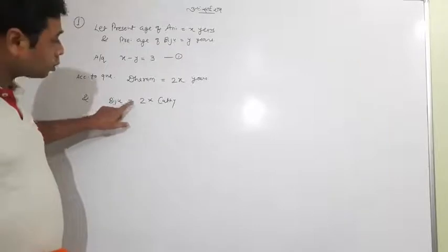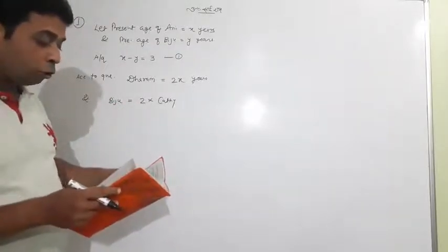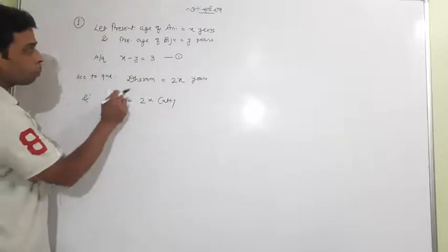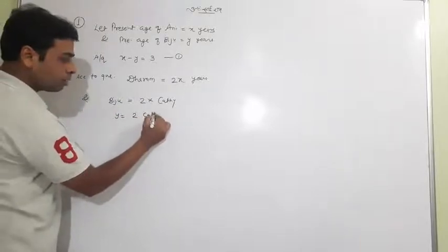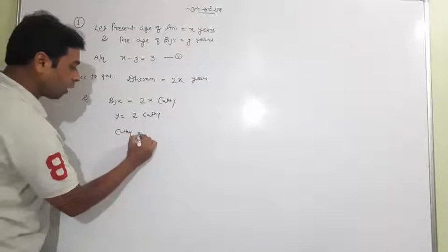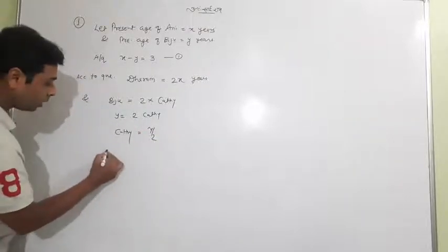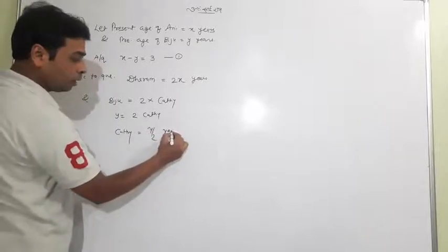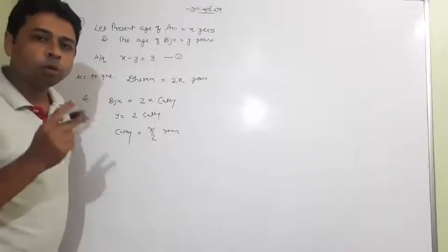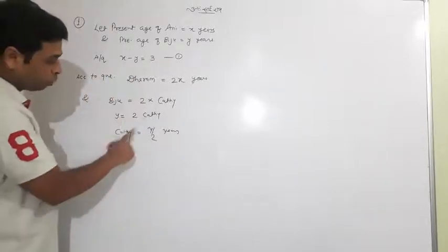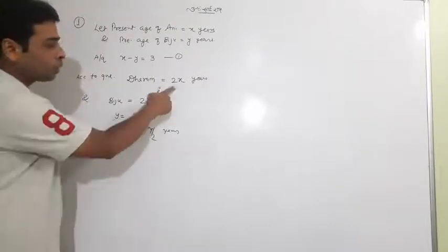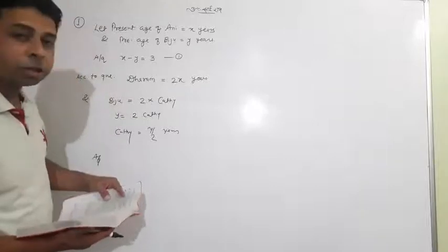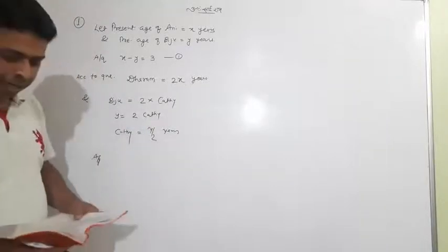And Biju is twice as old as his sister Cathy. Biju's age is Y, so Y equals two times Cathy's age, meaning Cathy's age equals Y divided by 2. So Dharam's age is 2X years and Cathy's age is Y/2 years. According to the question, two different persons have been introduced — Ani's father and Biju's sister — and we have found their present ages as 2X and Y/2. Now the next condition says the ages of Cathy and Dharam differ by 30 years.